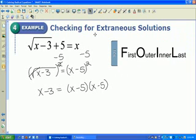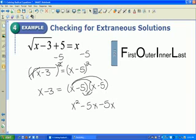FOIL is multiplying the first, outer, inner, and last. So my first is going to be x times x, which is x squared. Outer, which is x times negative 5, which is negative 5x. Inner, which is negative 5 times x, which is negative 5x. And then last, negative 5 times negative 5, which a negative times a negative is a positive. So I'm left with x squared minus 5x minus 5x plus 25 equals, don't forget this side over here, x minus 3.